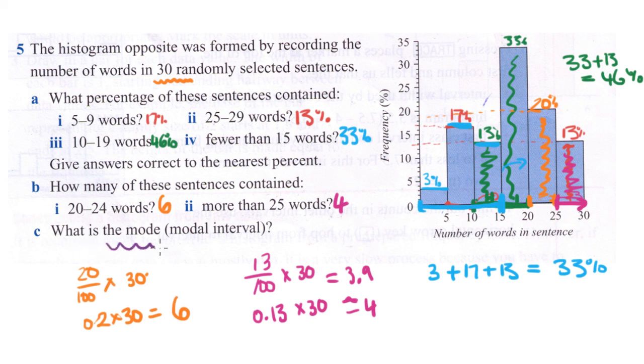The last part asks what is the mode, and they've given you this hint, the modal interval, because you can't from a histogram like this actually say what the mode is. We can say where it fell, what the range it was in. The modal interval, mode meaning most often occurring, is the thing that came up the most number of times. With a histogram you just look for the highest frequency.